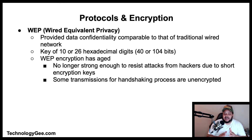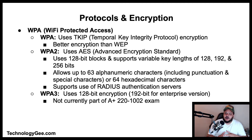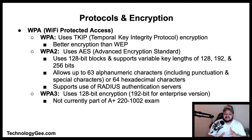Next we have WPA, or Wi-Fi Protected Access, and this was designed to replace WEP. There are three types of WPA encryption. The first is WPA, which uses TKIP — Temporal Key Integrity Protocol — encryption, which provides better encryption than WEP.